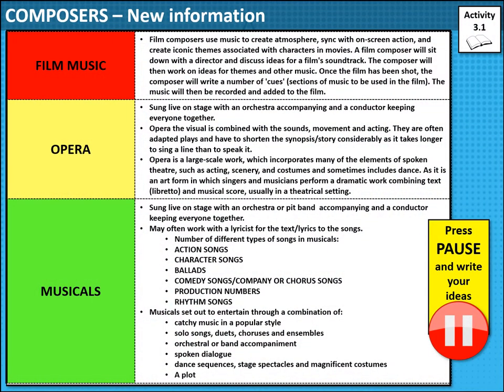So film music. There's quite a lot of information on this page so feel free to pause if you wish. Film music is used to create an atmosphere — to sync what is going on on screen with the emotions that you should be feeling, and to create an iconic theme associated with a character. A film composer will often sit down and discuss the ideas for a film soundtrack way before any of the shots have been filmed. The composer will sit down with the director and come up with ideas for how they see the music accompanying the film. It's more of an accompaniment — you're not really meant to know that it's always there.